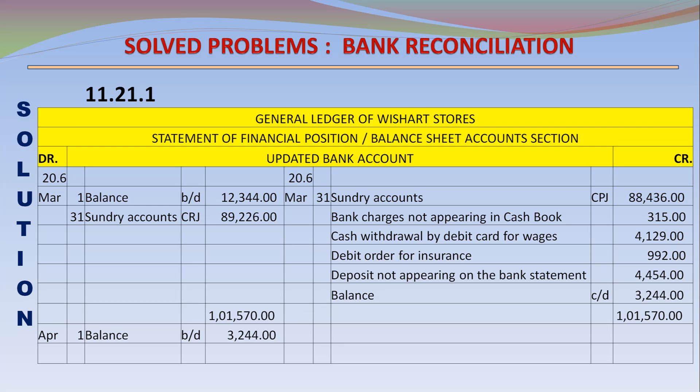Deposit not appearing on the bank statement 4,454; balance carried down 3,244. Total payments including balance carried down 101,570; total receipts 101,570. April 1, balance brought down 3,244 debit.